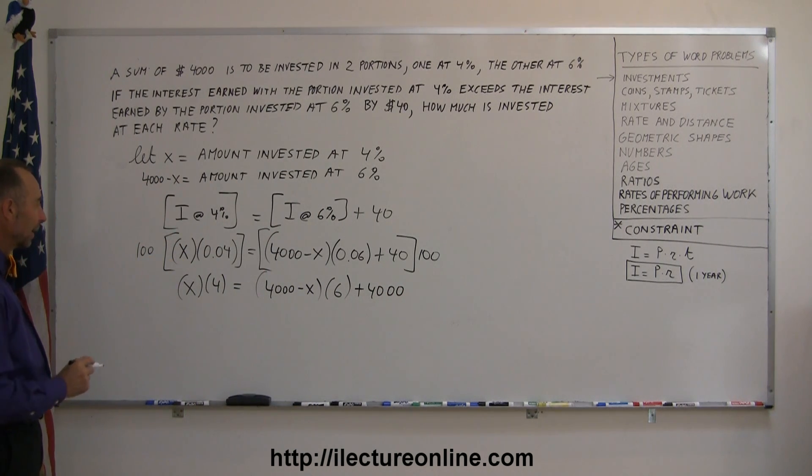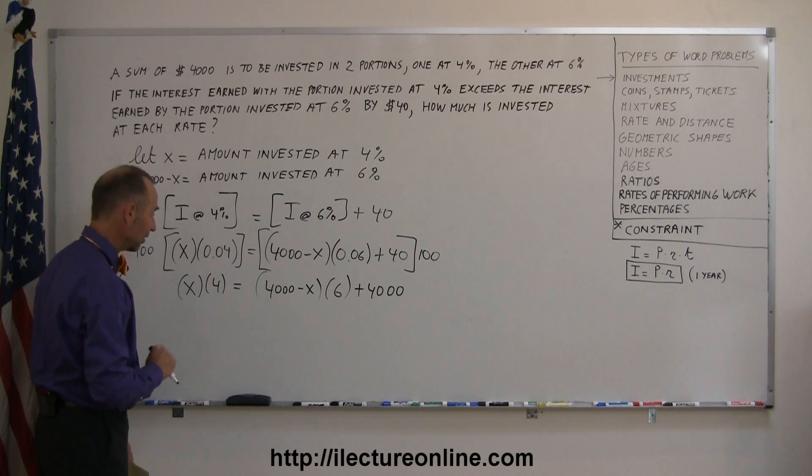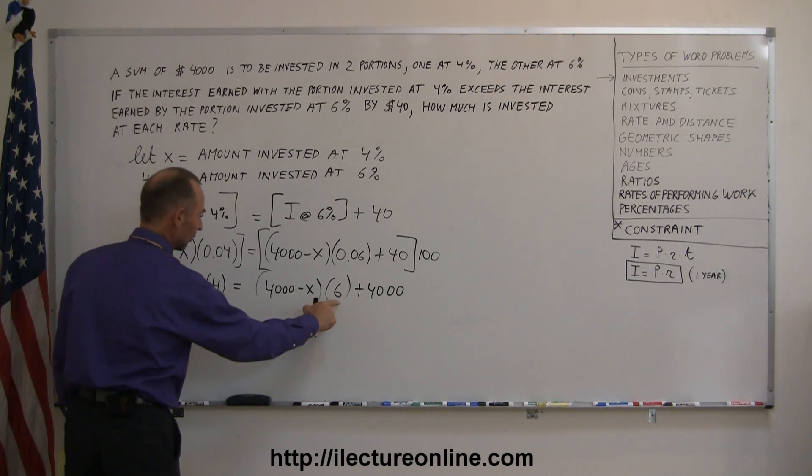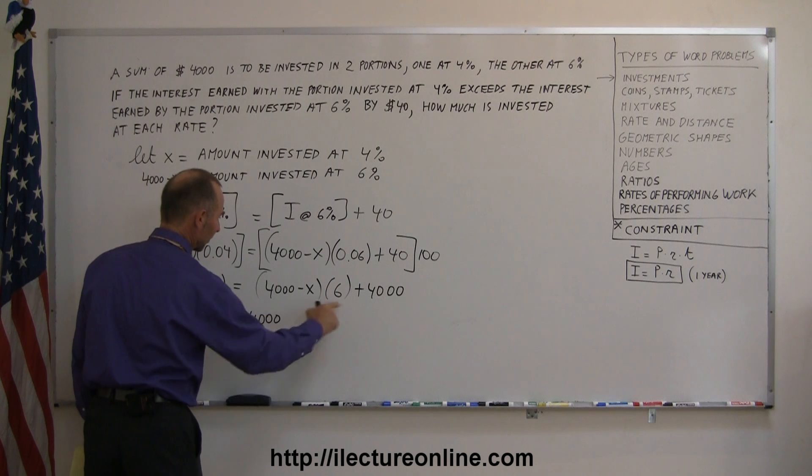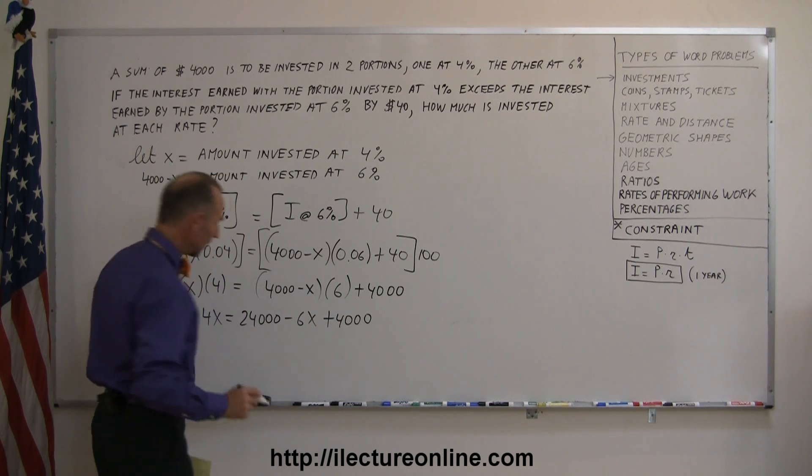Now we can go ahead and get rid of the parentheses, so we'll multiply everything out. So this is 4X equals 6 times 4,000 is 24,000. 6 times X is, and it's a minus, that becomes minus 6X, and that would be plus 4,000.